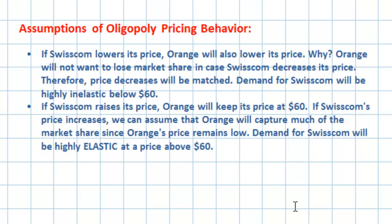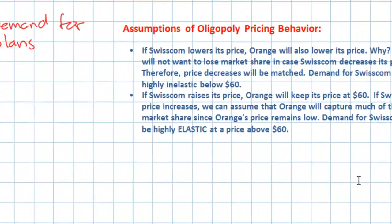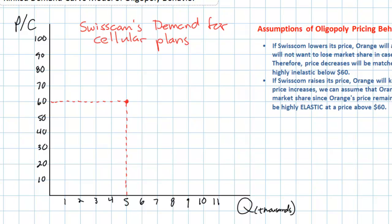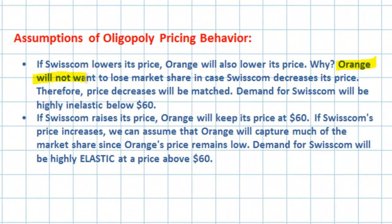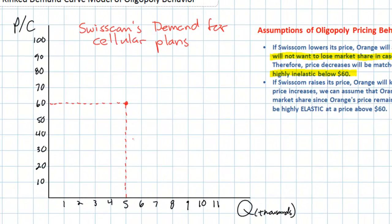So we've made two important assumptions about oligopolistic pricing behavior: price decreases will be matched, and price increases will be ignored. With these assumptions, we can derive a demand curve for Swisscom's cellular plans. Starting at $60, if Swisscom lowered its price to $40, the quantity demanded would only grow from 5,000 to 6,000 customers — a very small increase — because we assume the competitor will also lower its price. Demand is highly inelastic below $60.